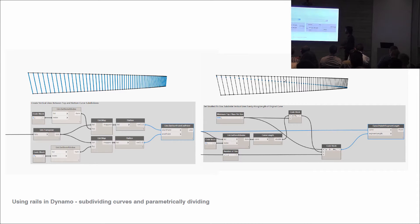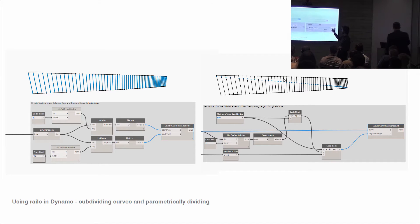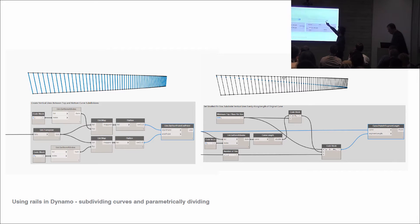We run something called curve point at segment length, once we understand that our smallest fin size must be 600mm on one side and our largest fin size on the other side must be the whole length minus 600. We can feed those into a start-end-step — 600, n minus 600 — and the initial fin slider to create a curve point at segment length. Notice that's set to normal lacing, and that gives us the intersection of these curves gradually getting smaller as it moves down.